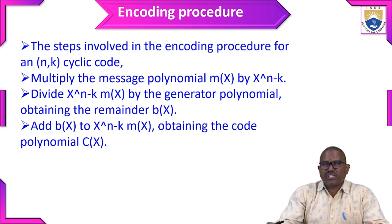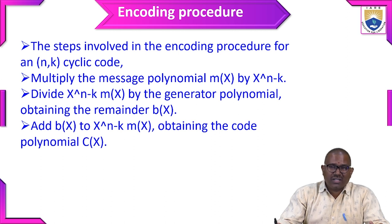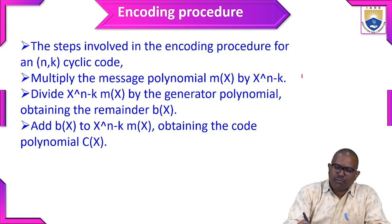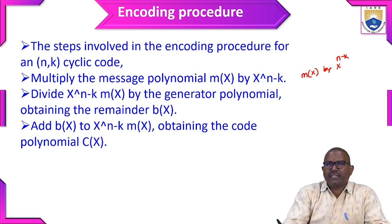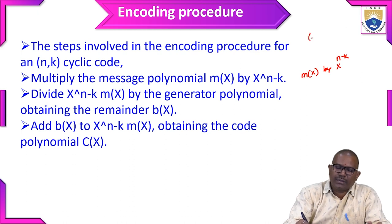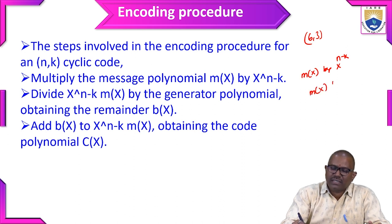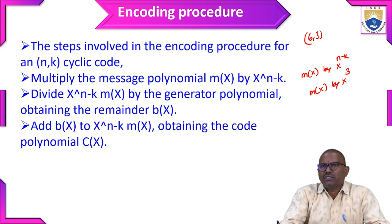Now the encoding procedure — this is very useful for problems in cyclic codes. The steps involved in the encoding procedure for an (n, k) cyclic code are as follows. Step 1: Multiply the message polynomial m(x) by x to the power of n minus k. For example, if n comma k is 6 comma 3, then n minus k is 3, so m(x) is multiplied by x cubed.